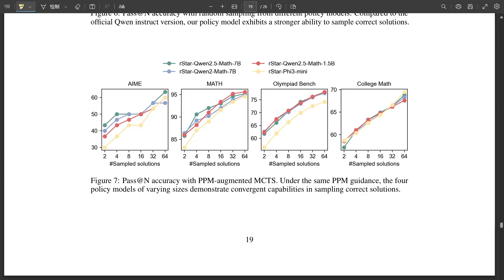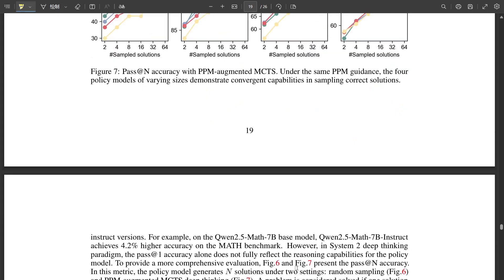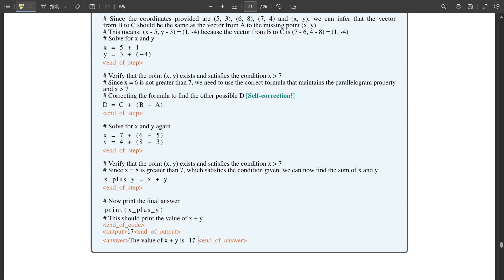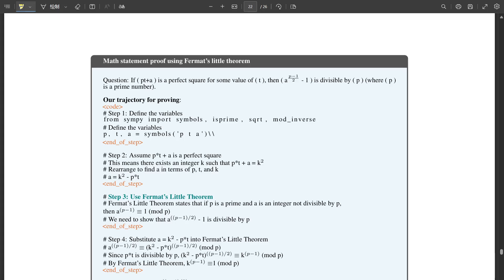But as with any powerful technology, there are bound to be challenges and considerations. Of course. What are some of the hurdles we might encounter as we explore the full potential of R-Star Math? Well, one key challenge is data. As we've talked about, training these deep thinking models requires massive amounts of high-quality math data, which isn't always readily available. Especially when we're dealing with advanced mathematical concepts, that data pool can be pretty limited. It's like trying to train a chef with only a handful of exotic ingredients. It's hard to create a masterpiece with limited resources. Exactly. And even when data is available, ensuring its accuracy and relevance is crucial. We don't want to introduce biases or errors that could lead the AI down the wrong path. It's like giving a student a textbook with incorrect information. It could undermine their entire understanding.